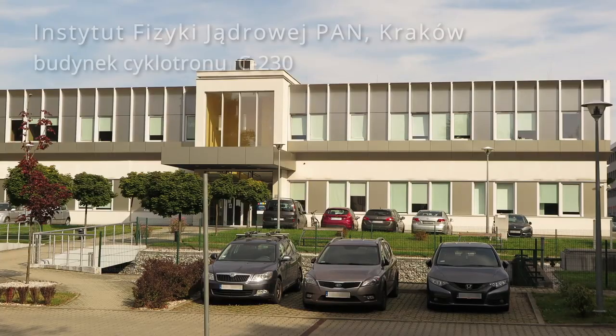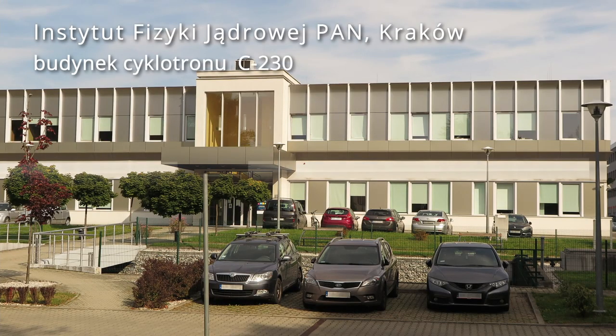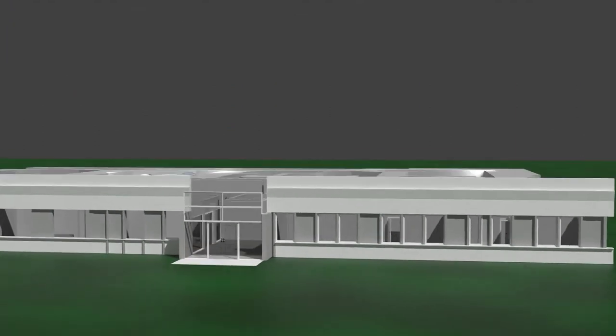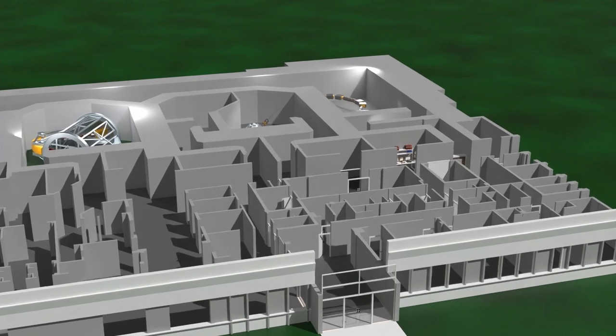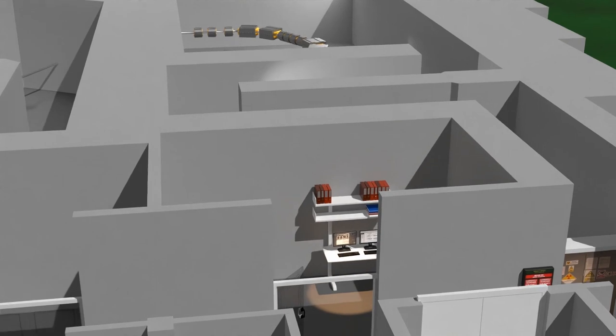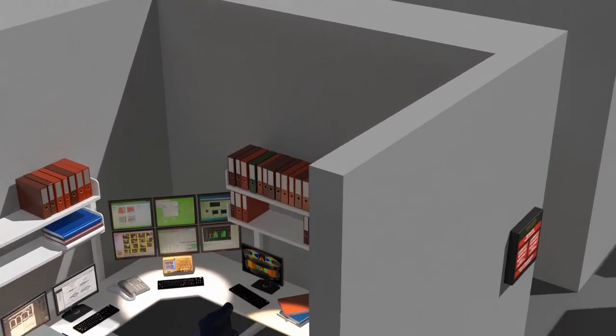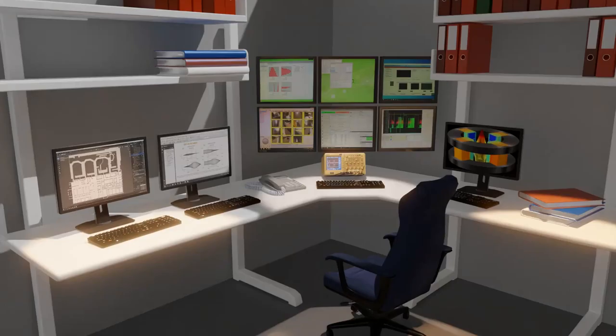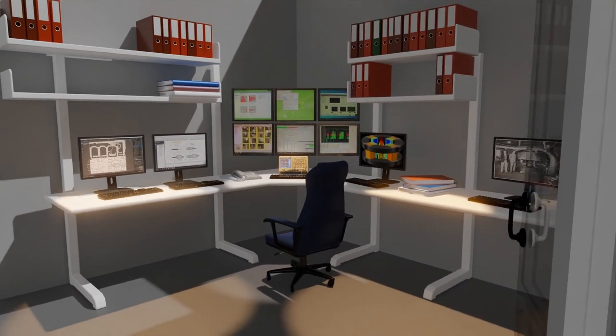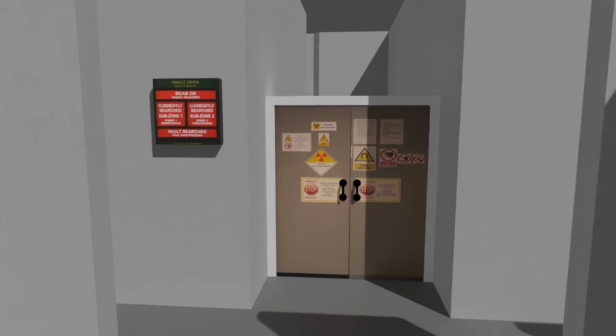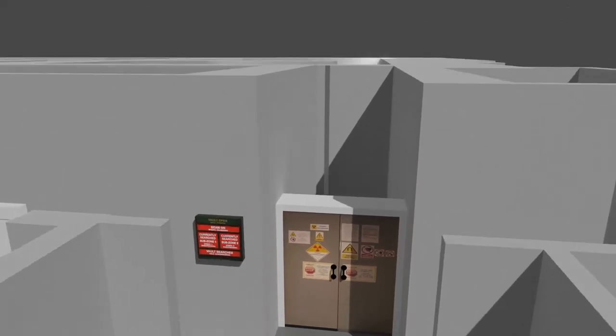And the cyclotron itself, what does it look like in practice? In our institute we have two of them. I'll show you the newer one. This is the C230 cyclotron. The most important parts are on the ground floor of this building. Here is the cyclotron control room, where operators monitor the cyclotron's operating parameters.